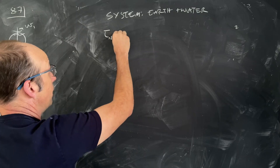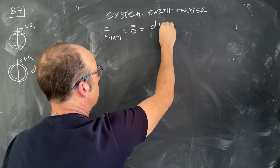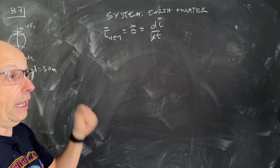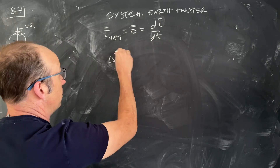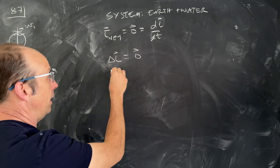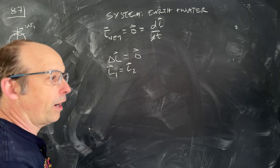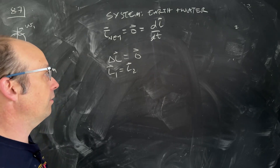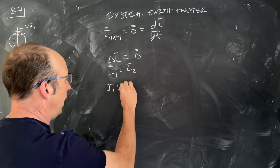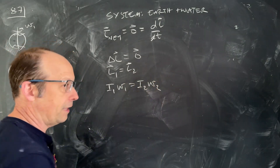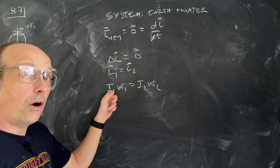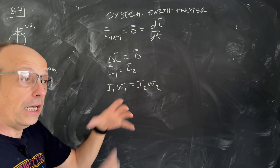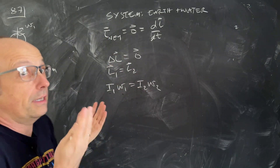With net torque equal to zero, dL/dt = 0, so angular momentum L is constant: L1 = L2. Since they're in the same direction, we get the scalar equation I1·omega1 = I2·omega2. If the moment of inertia increases, the angular velocity decreases, making the day longer. So the day should be a little longer — but by how much?